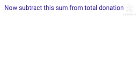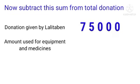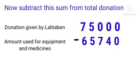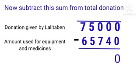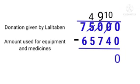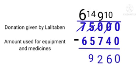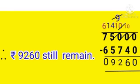Now subtract this from the total donation. Total donation was Rs. 75,000, and the amount used for equipment and medicine was Rs. 65,740. So we will subtract. 0 minus 0 is 0. We cannot do 0 minus 4, and the next digit is also 0, so we borrow from 5: 5 becomes 4, 0 becomes 10, then 10 gives 1 making it 9, and 0 becomes 10. 10 minus 4 is 6. 9 minus 7 is 2. From 4 we cannot minus 5, so borrow: 7 becomes 6 and 4 becomes 14. 14 minus 5 is 9. 6 minus 6 is 0. Therefore Rs. 9,260 still remain.